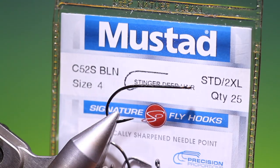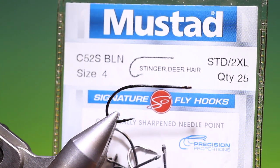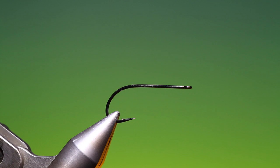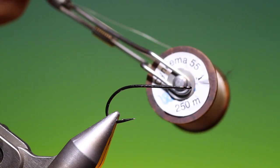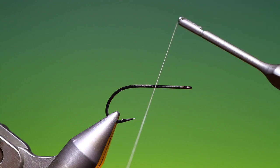Okay, we'll start with a Mustard C52s size 4 stinger hook. I have Dyneema 55, this is the cigar.